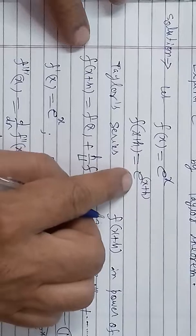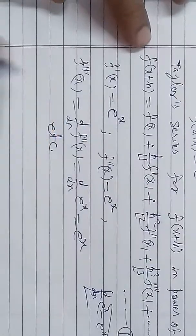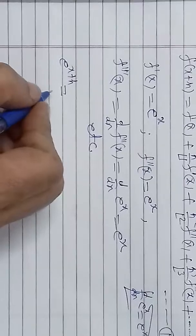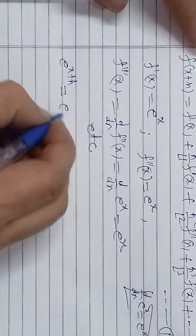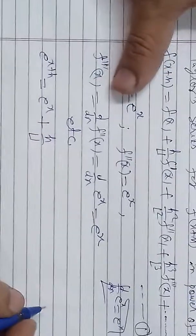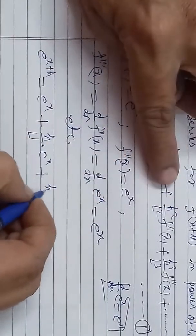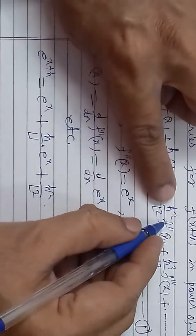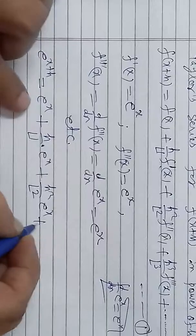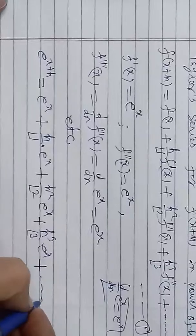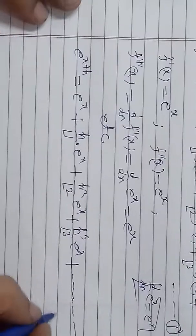In values ko yahan put karna hai. Left-hand side mein e to the power (x+h) rakhna hai, aur baaki sari values equation number one mein put karna hai: e^(x+h) = e^x + h/1! · e^x + h²/2! · e^x + h³/3! · e^x + and so on to infinity. Series mein number of terms infinite honge. Yahi prove karna tha.